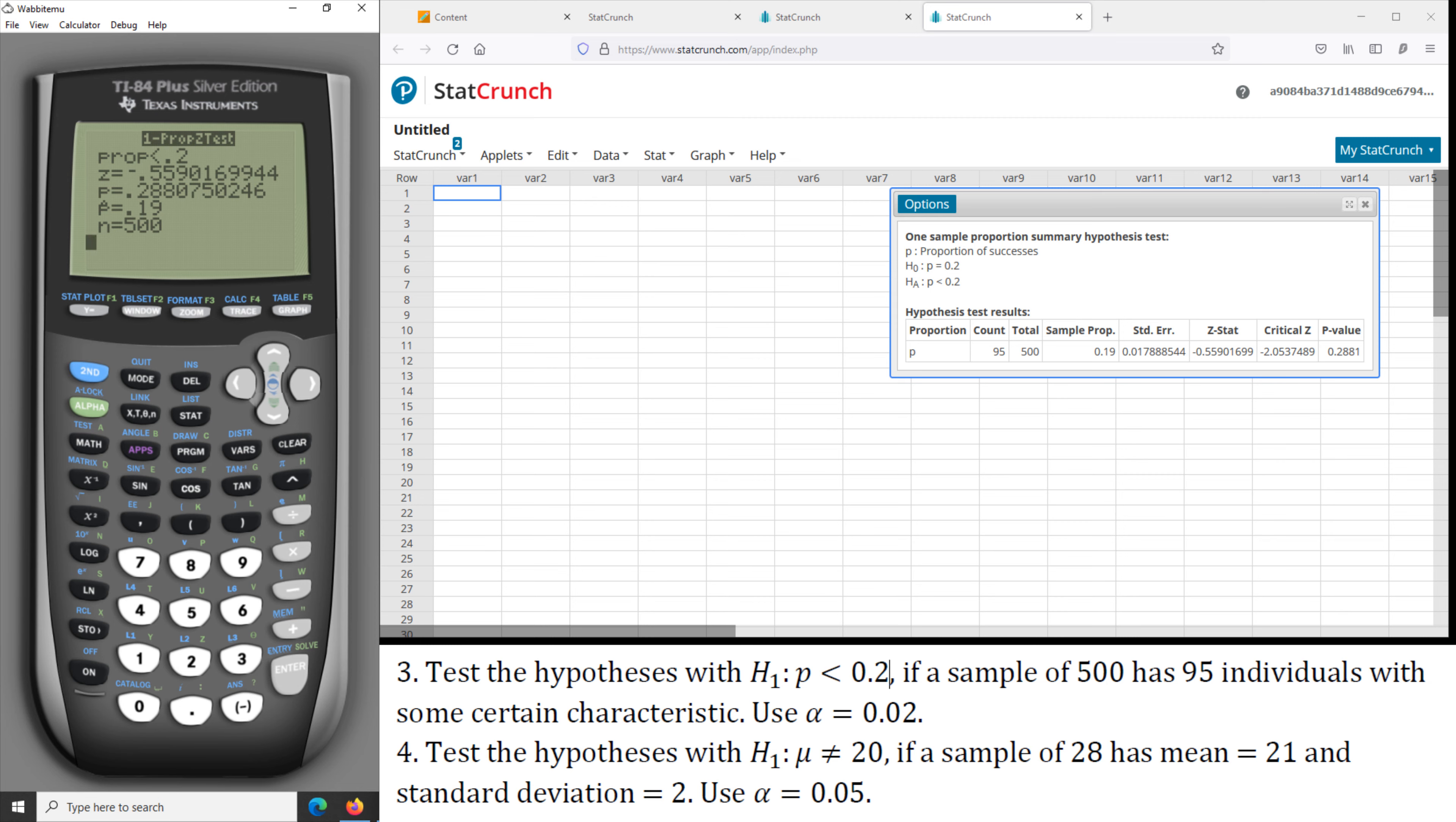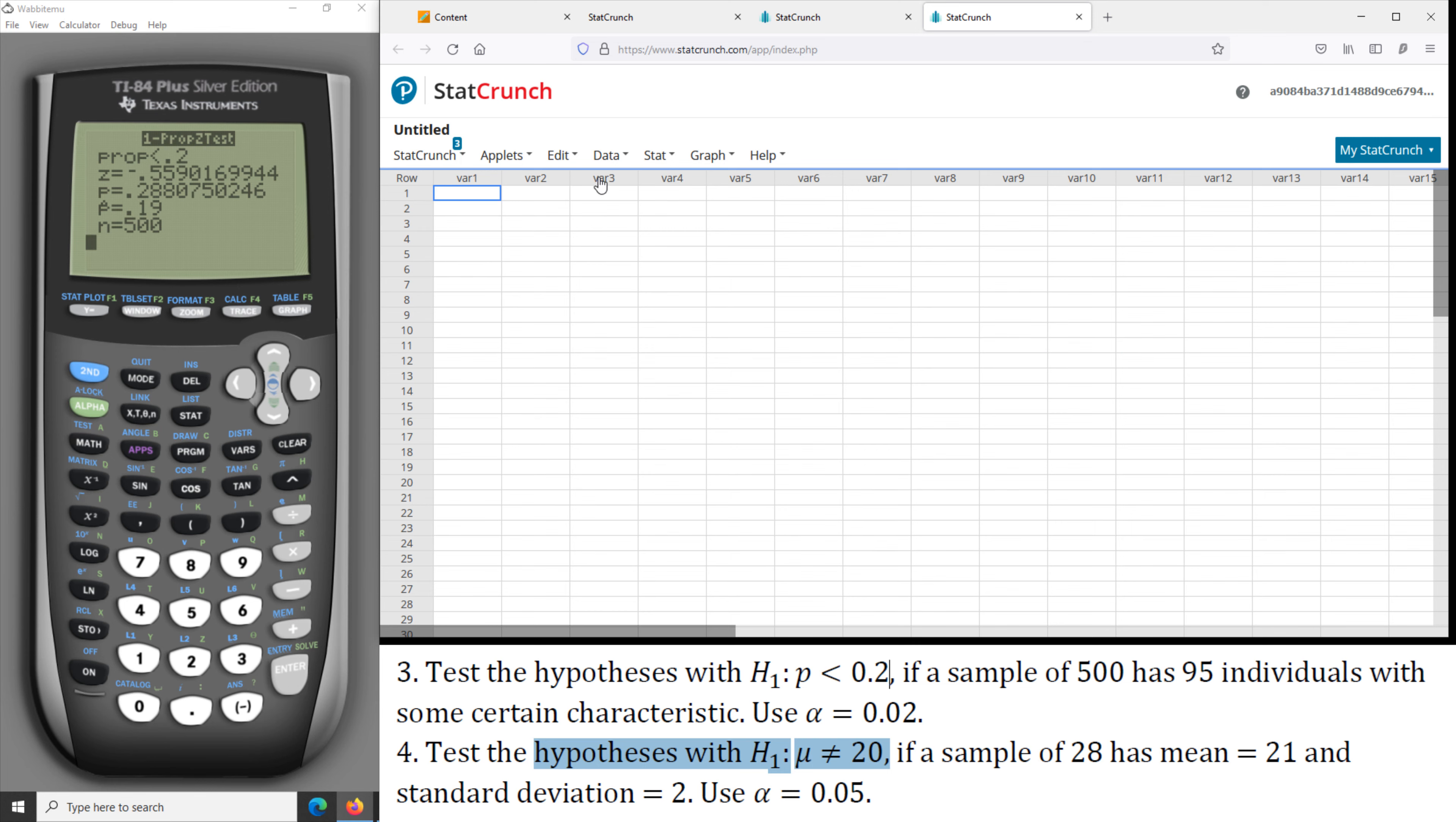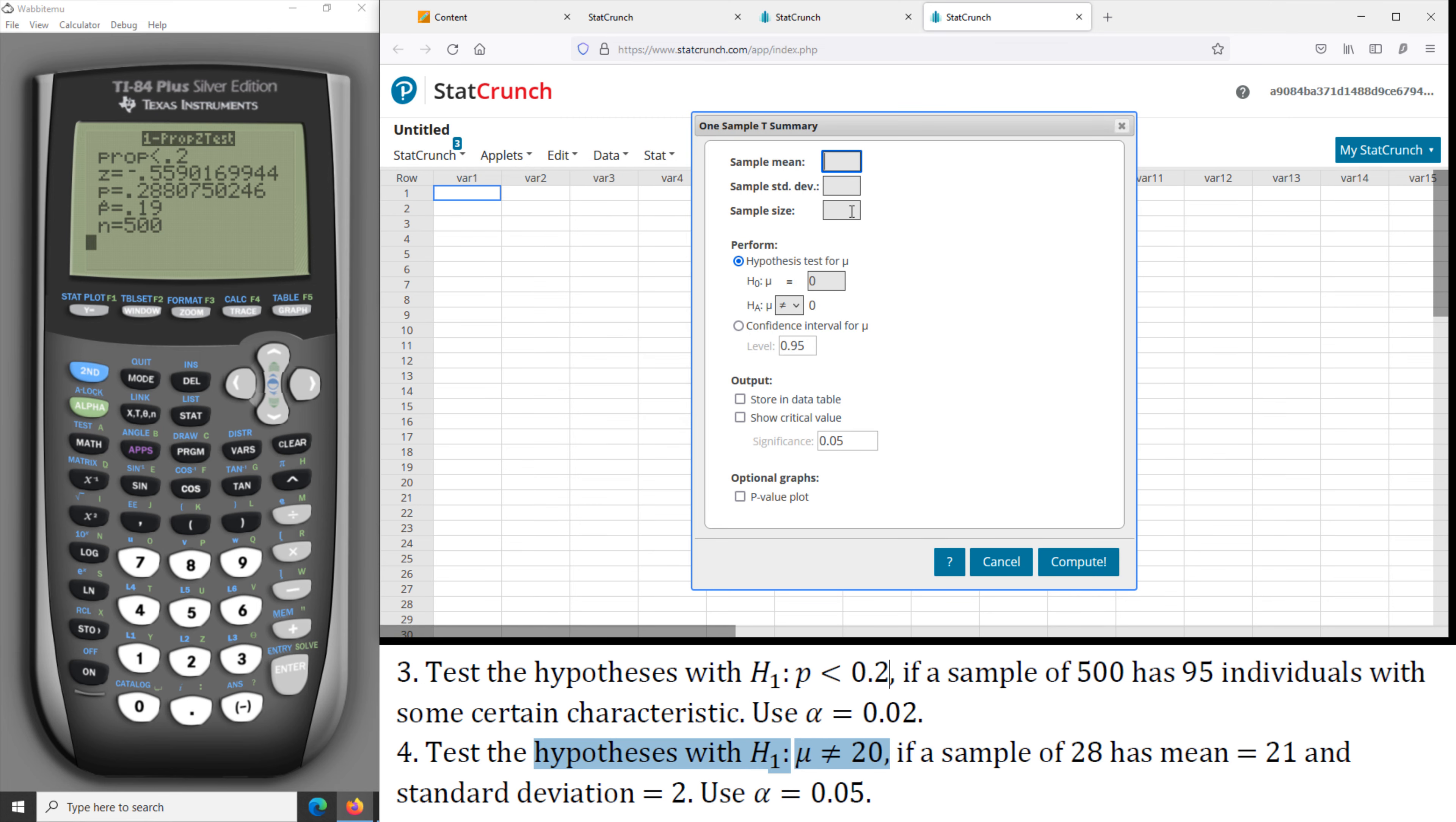Next we have the problem for testing hypothesis for the population mean. If you're using StatCrunch, it will be under the T-stat for the population mean, and one sample with summary.